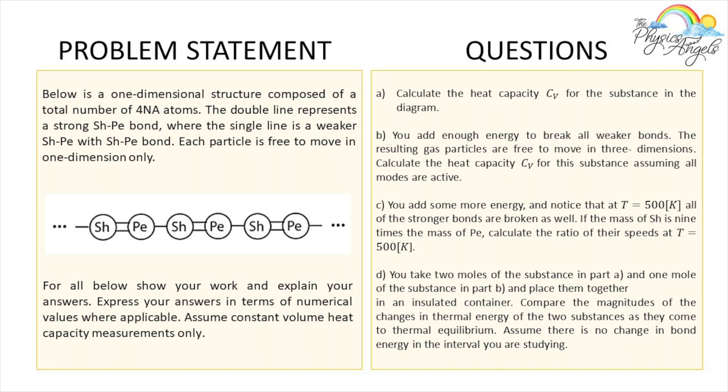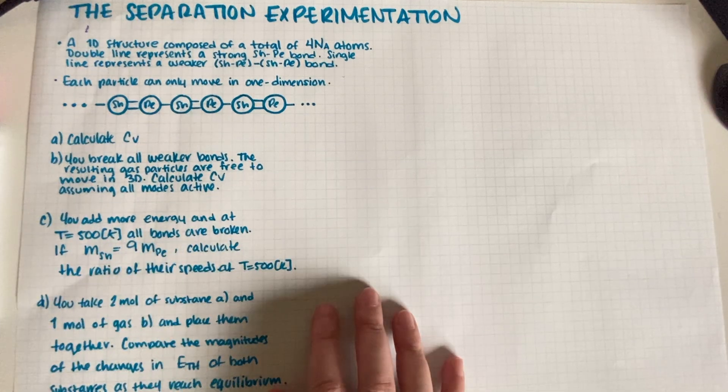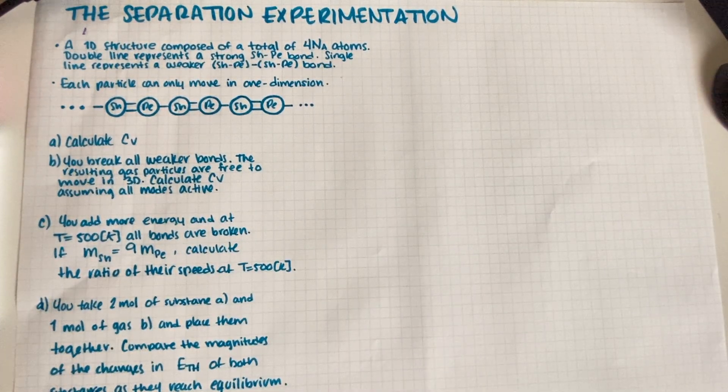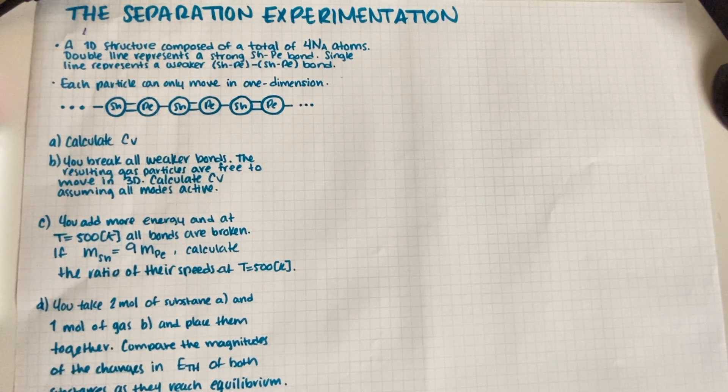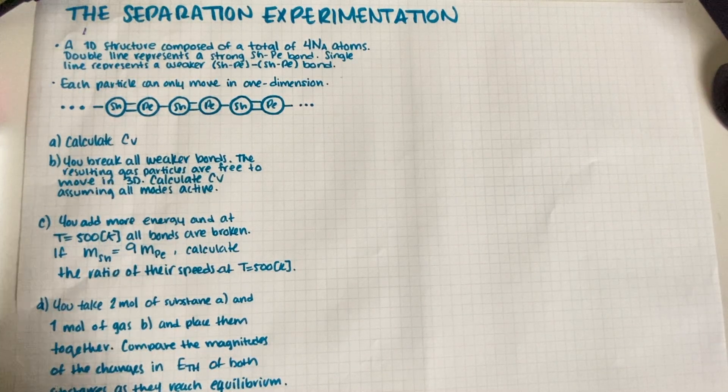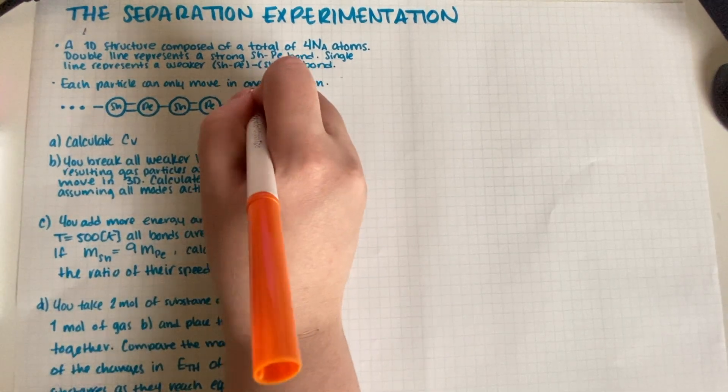So we have to calculate the heat capacity C_v for this substance. Then we are going to add enough energy to break all the weak bonds and measure the heat capacity again. Then we're going to add more energy and break every single bond. Once we have a gas, we're going to calculate the ratio of the speeds of the sheldonium and the cupertonium. All right, so let's start from the top. The first thing is we have a one-dimensional solid.